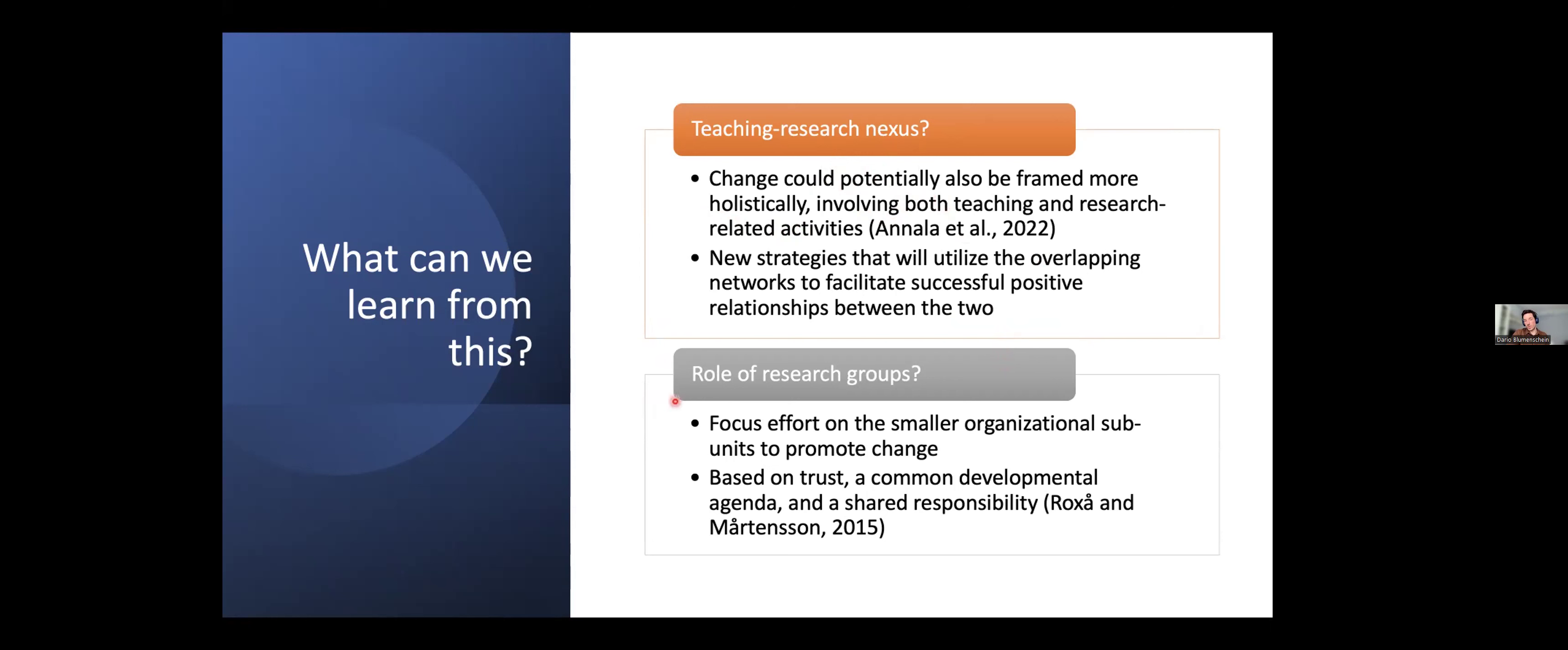Another thing is then what is the role of research groups in, at least in our example, but it appears in other examples as well. And we say that that means that we should focus our effort on smaller organizational subunits to promote change rather than individual people. Because we also know from Roxson and Martinson's study that the smaller microcultures, they are based on trust, common developmental agenda, and a shared responsibility. Which also means another good thing about having such a group is that if we are to introduce a certain change, if that change fails, the risk is no longer just on me as the individual, it's shared in the group. So we are then more prone to take some risks and try to do something and try to introduce certain things.